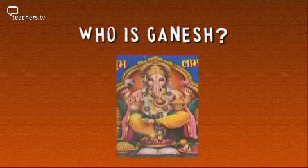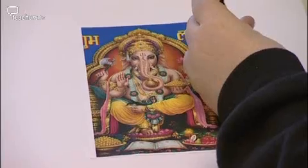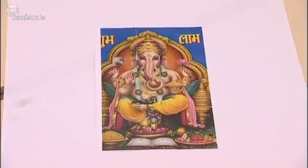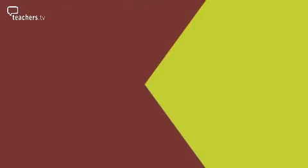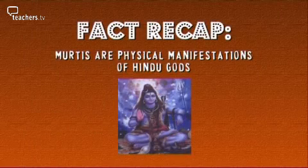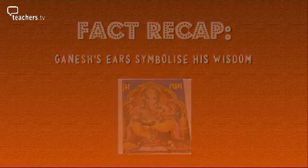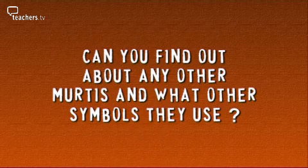Who is Ganesh and what is he god of? Ganesh's trunk represents intelligence and power. His ears represent wisdom — so you can hear and learn things. There is a little mouse that carries him around, representing how the old depend on the young and the young depend on the old. Ganesh is the lord of wisdom and the remover of obstacles. Murtis are physical manifestations of Hindu gods. Lakshmi represents wealth and good fortune. Ganesh's ears symbolise his wisdom. Can you find out about any other Murtis and what symbols they use?